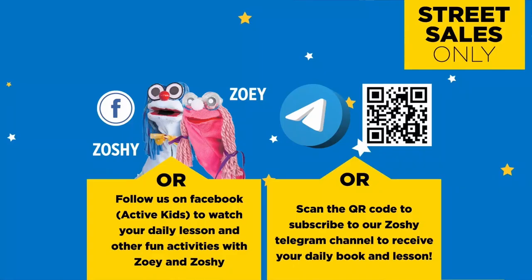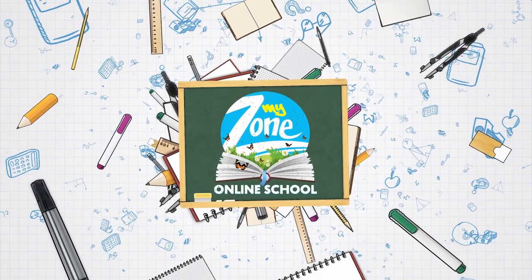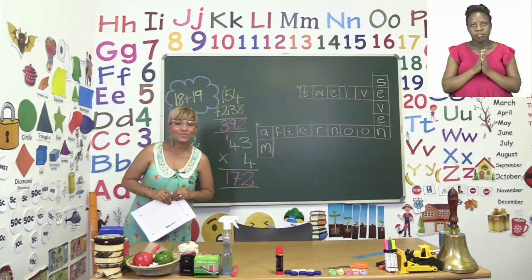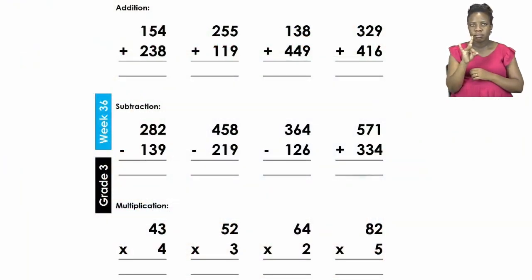Follow us on my zone Facebook, Active Kids to watch your daily lesson and other fun activities with Zoe and Zosie. Now let's start this part of the lesson on page 18. Now here we are doing computation. Here it says do the following calculations. Now there you will see you have addition, subtraction, and multiplication sums.